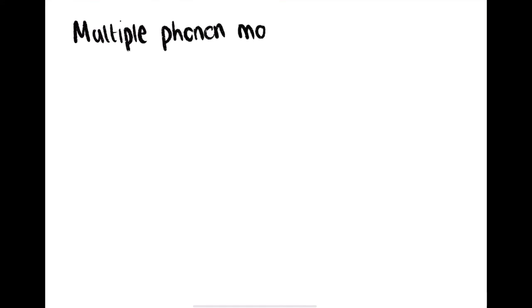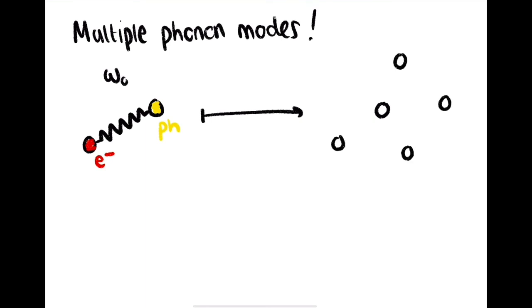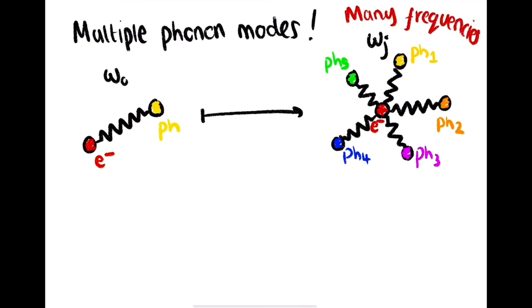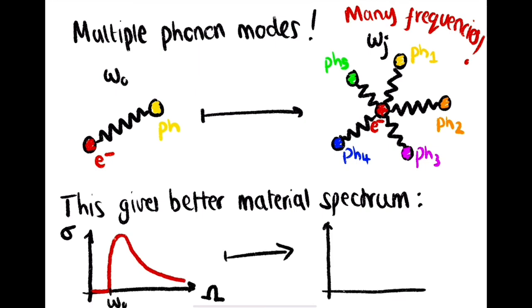I have extended Feynman's model to include multiple phonon modes, which replaces the single-spring approximation by one where the electron is coupled by springs to many fictitious particles with different vibrational frequencies and masses. This allows us to more accurately model the polaron quantum response to give better predictions for the conductivity spectra of materials.